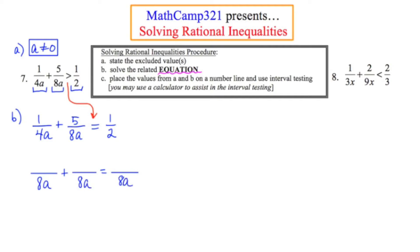I'll cycle through each of those three fractions and ask what I need to introduce to get to that LCD. To get 4A to look like 8A, I need to introduce a 2, and 1 times 2 is 2. The second fraction already has 8A, so I leave the numerator of 5 alone. For the last denominator of 2, I need to introduce 4A to get 8A, so I multiply the top by 4A, giving a numerator of 4A. Once all fractions share the same denominator, I cancel out the denominator and solve: 2 plus 5, or 7, equals 4A.